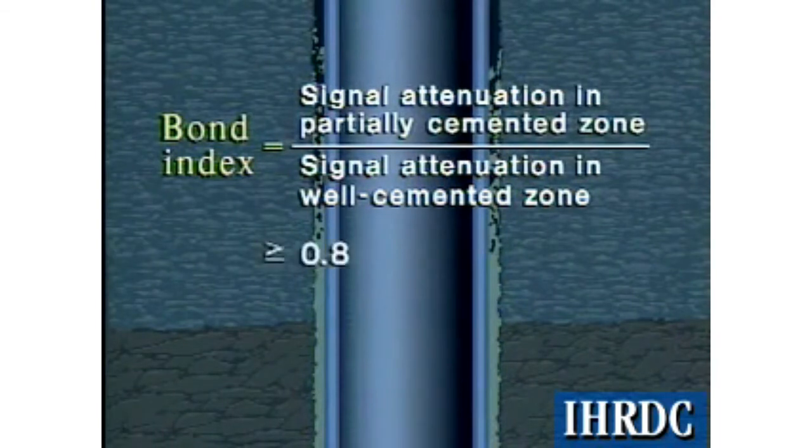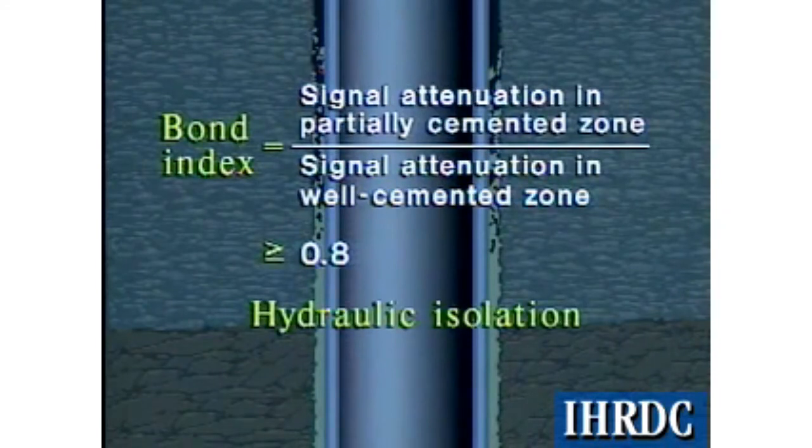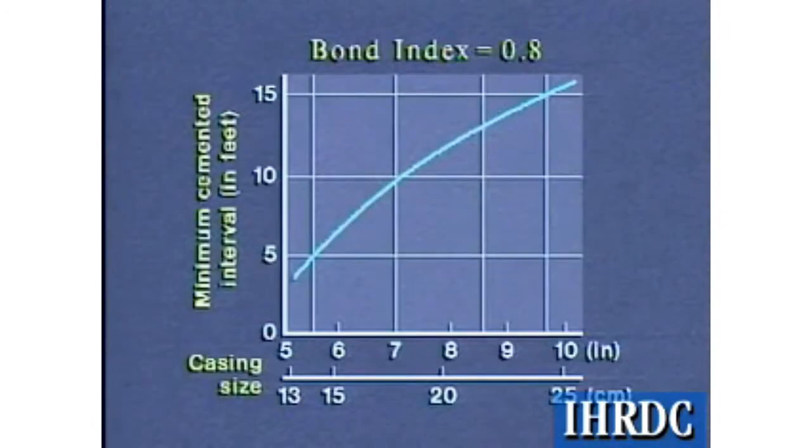If the bond index is 0.8 or better over an interval of pipe, a reasonable assurance of hydraulic isolation is possible. The interval length of 0.8 bond index required for a variety of pipe sizes is anywhere from 5 to 15 feet (1.5 to 4.6 meters).